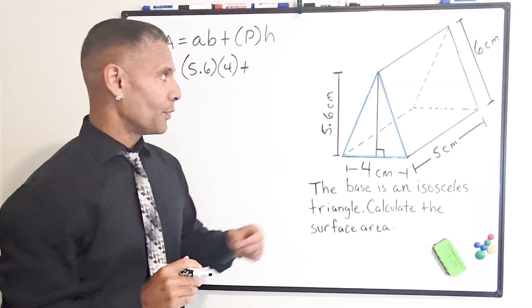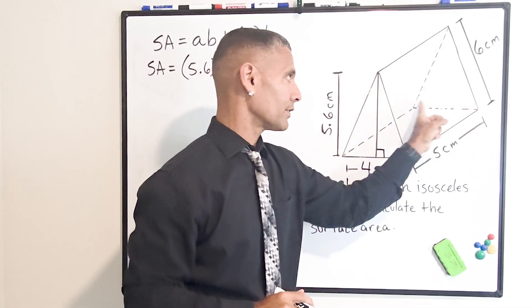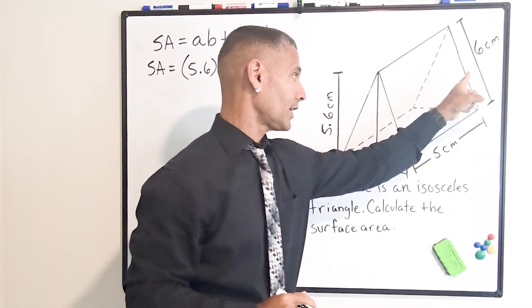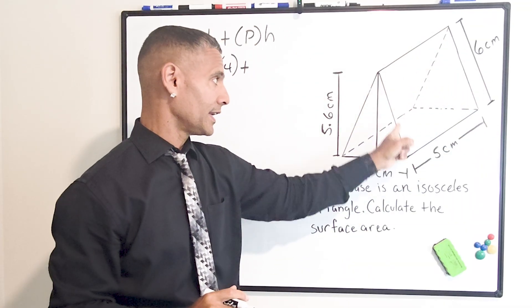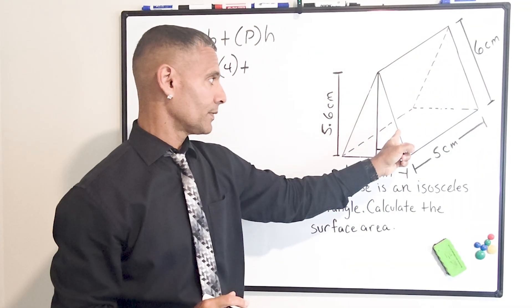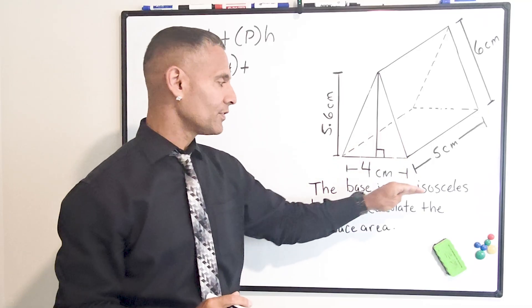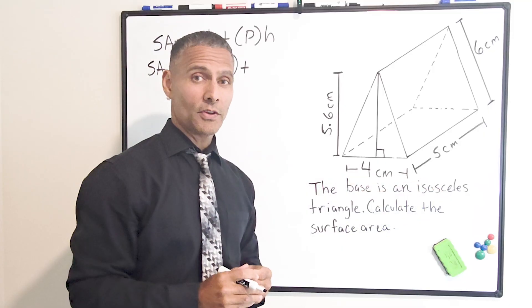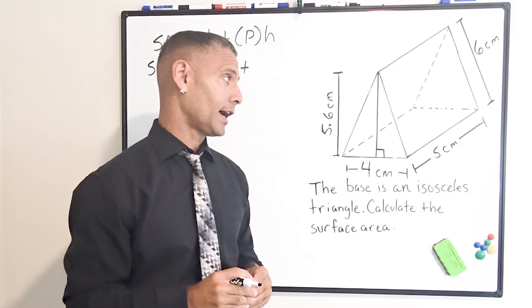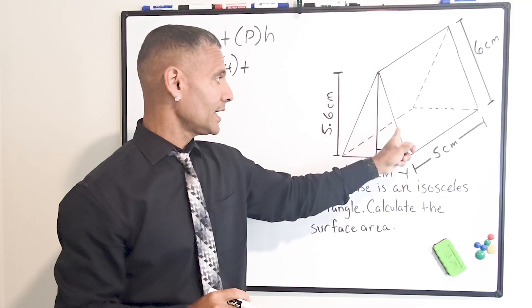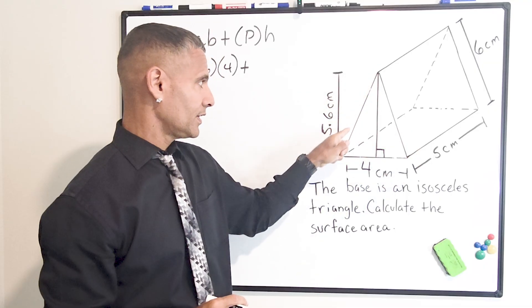Now, we can see that this side of this triangular face right here is six centimeters, which means its corresponding side here is also six centimeters. The base of this triangle is four centimeters. And because we have an isosceles triangle, that means that the third side must be equal in length to one of the other two sides. So if this side is six here, that means this side is six here.